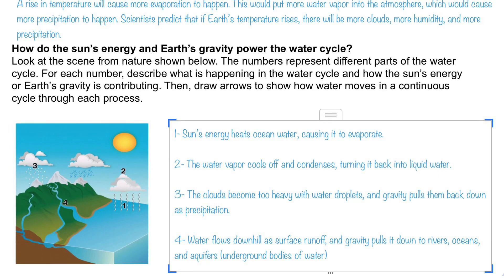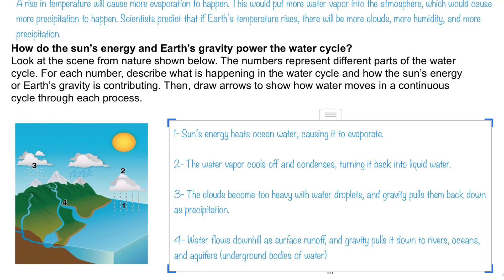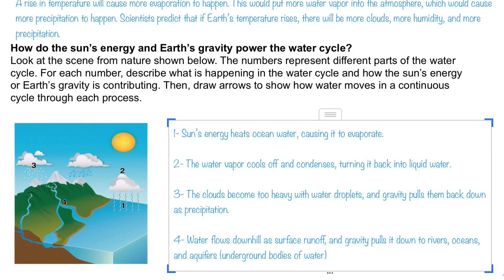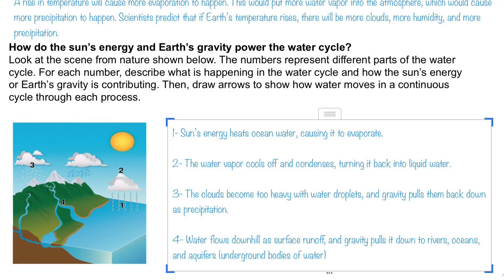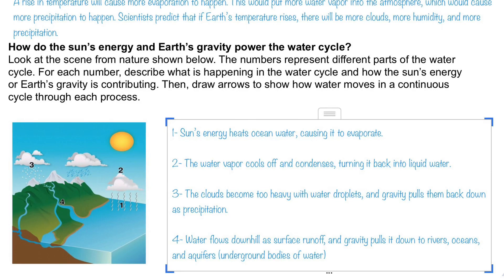The last question asks us to identify what's going on at each numbered point in the picture of the water cycle. Number one is showing the sun's energy heating ocean water causing it to evaporate. Number two shows that water vapor cooling off and condensing, which forms a cloud made up of tiny droplets of liquid water. Number three shows those clouds becoming too heavy with water droplets, which causes gravity to pull them back down as precipitation.